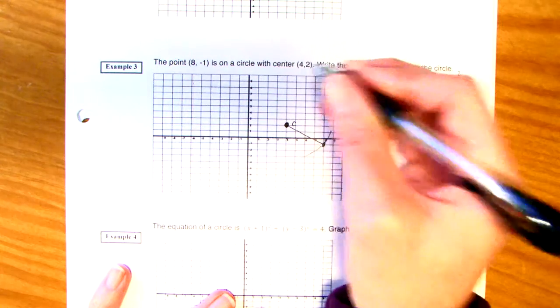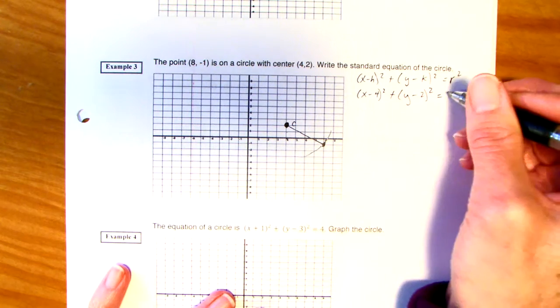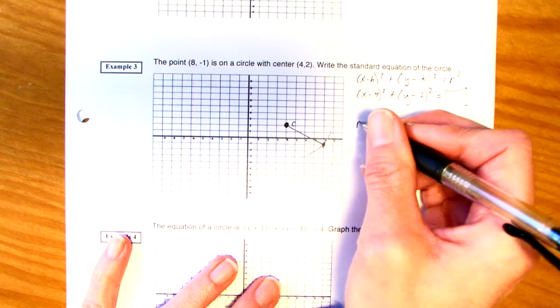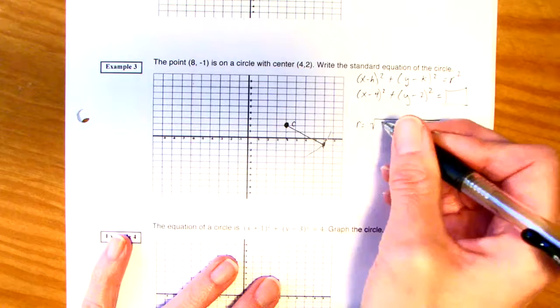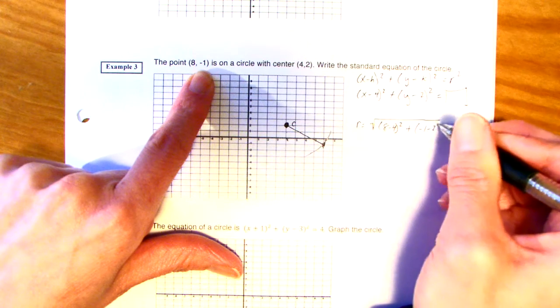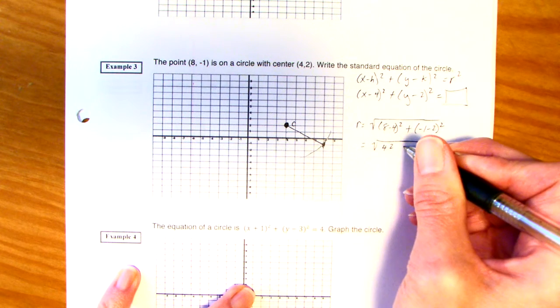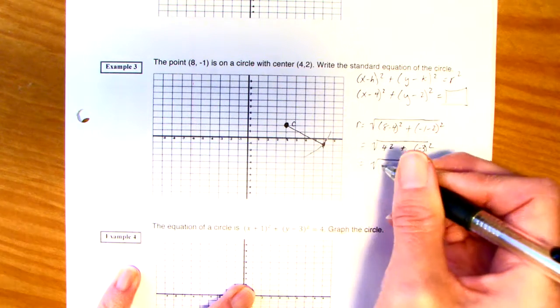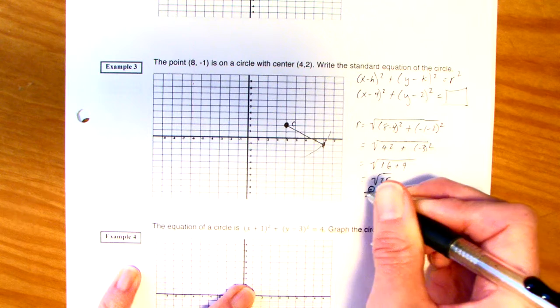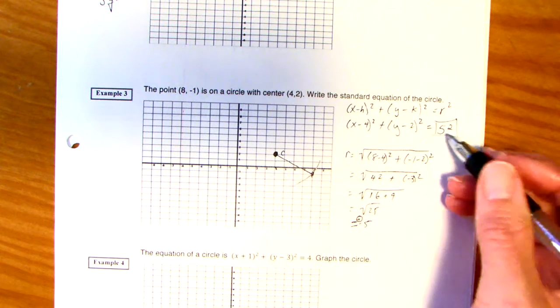So, remember, with our formula, x minus h squared plus y minus k quantity squared is equal to r squared. You need the center, which we have. So, x minus 4 squared plus y minus 2 squared is equal to our r squared. This is what we need to find. Well, that's a distance. So, just use the distance formula. So, to find our radius, take the square root of 8 minus 4 squared plus negative 1 minus 2 squared. So, you have 4 squared plus a negative 3 squared. 16 plus 9 is the square root of 25, which is 5. Remember, it's plus or minus, but we're only going to do it with the positive. So, what do I put here? 5 squared. Pretty neat, huh?